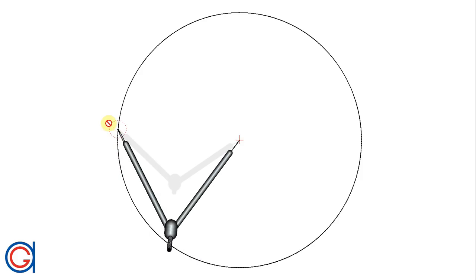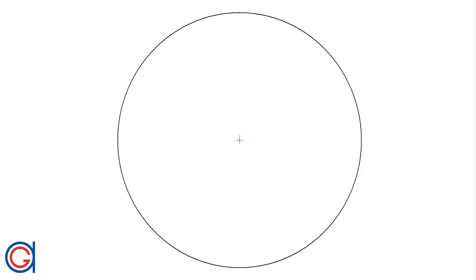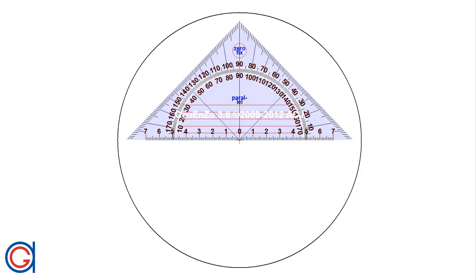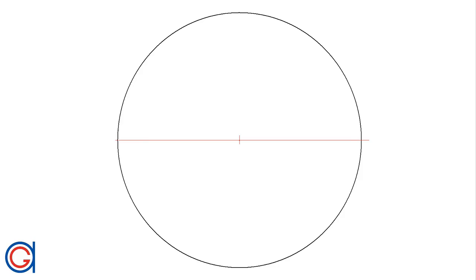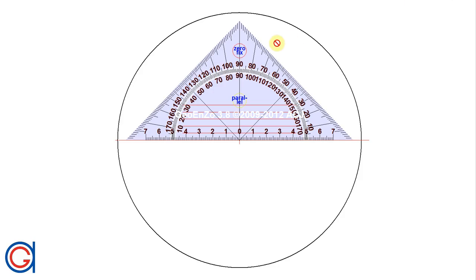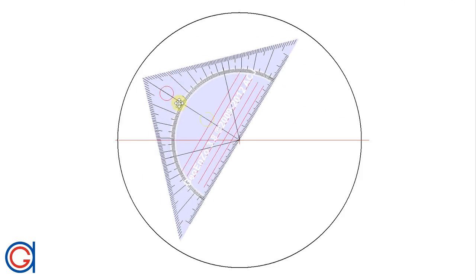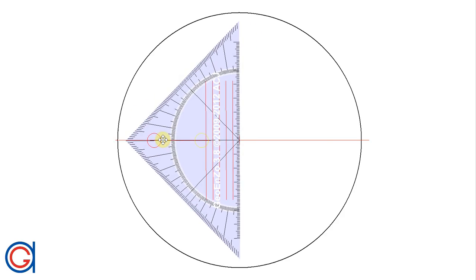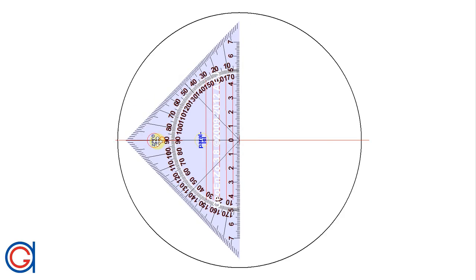So now that we have drawn the circle, we are going to divide its circumference into 32 equal parts. The first step is to divide the circle into four equal parts by drawing a horizontal and vertical diameter, as can be seen here in the video. These lines are in red because they are construction lines which will not form part of the final drawing.